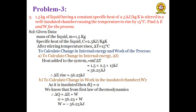Next problem: 1.5 kg of liquid having a constant specific heat of 2.5 kJ/kg·K is stirred in a well-insulated chamber, causing the temperature to rise by 15°C. Find ΔE and W for the process. The mass is 1.5 kg and specific heat is 2.5 kJ/kg·K.